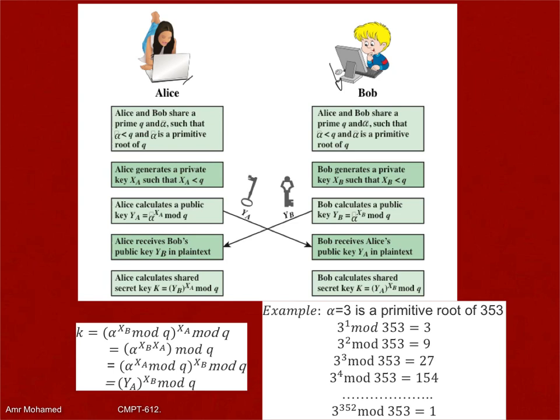We are basically generating a symmetric key from an asymmetric method. The result will be the same key on both sides. What is actually hidden is that Bob doesn't know XA and Alice doesn't know XB. Because we exchange YA and YB, we are able to establish that secret number on both sides without anyone in the middle knowing what the secret key is.